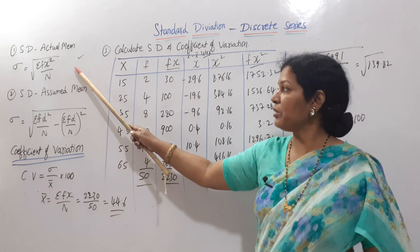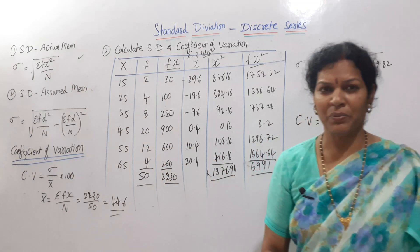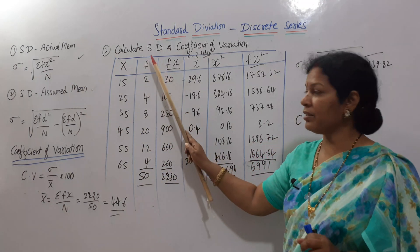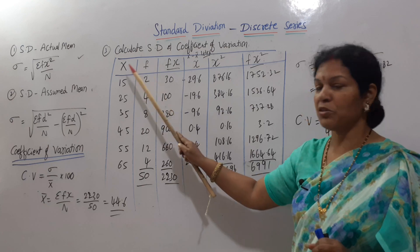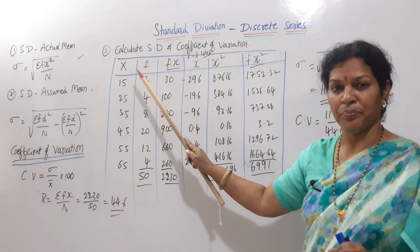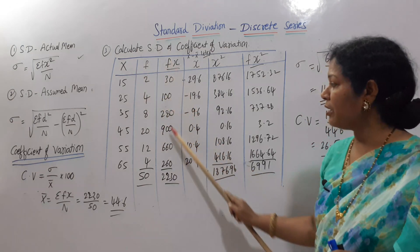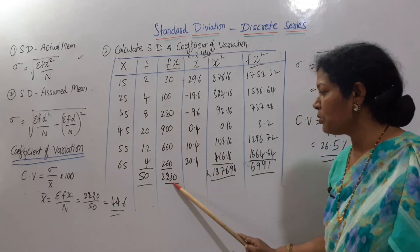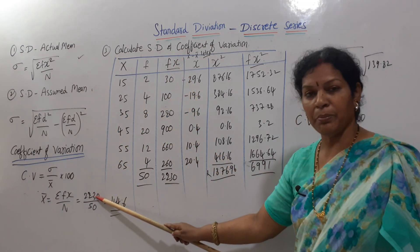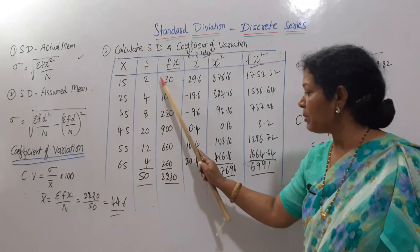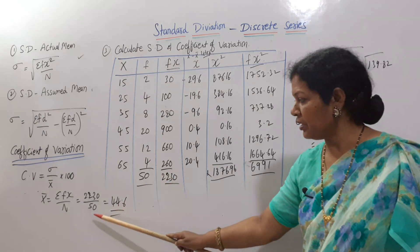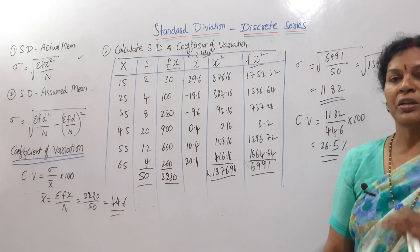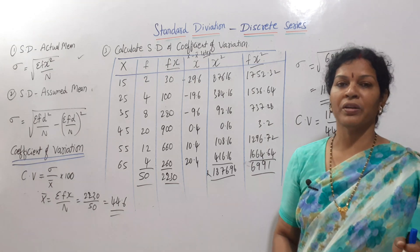As per the actual mean method, first calculate the mean. The data gives us x and f values. Using sigma f·x divided by n: sigma f·x total is 2230, n is 50, so x-bar equals 44.6.